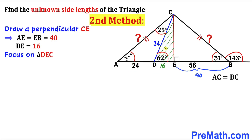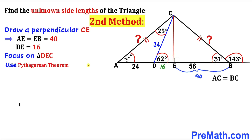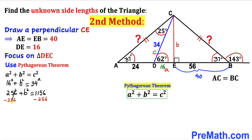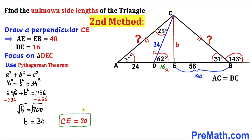Now let's focus on right triangle DEC and apply the Pythagorean theorem: A² + B² = C². Here A is 16, C is 34, so 16² plus B² equals 34². Subtracting 256 from both sides, B² equals 900. Taking the square root, B equals 30 units. Therefore side CE turns out to be 30 units.